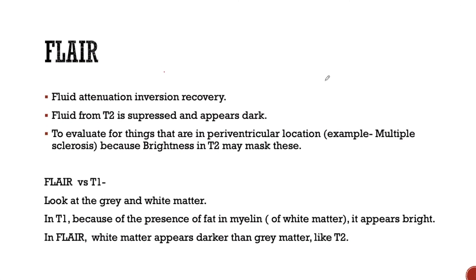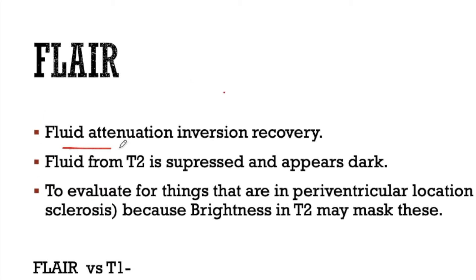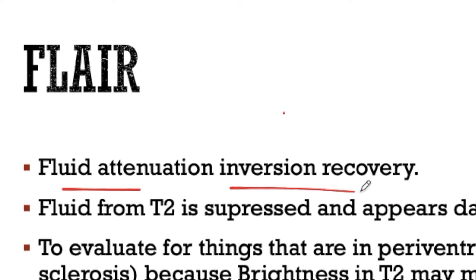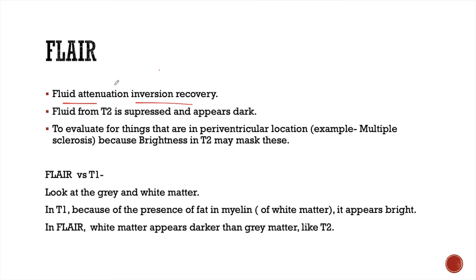The next important sequence is FLAIR — fluid attenuation inversion recovery. From its name, it means that the fluid is attenuated, meaning the fluid is suppressed. FLAIR is usually based on T2 weighted image, but the fluid is suppressed in T2 to get a FLAIR image. This is done so that we can evaluate things that are in periventricular locations.